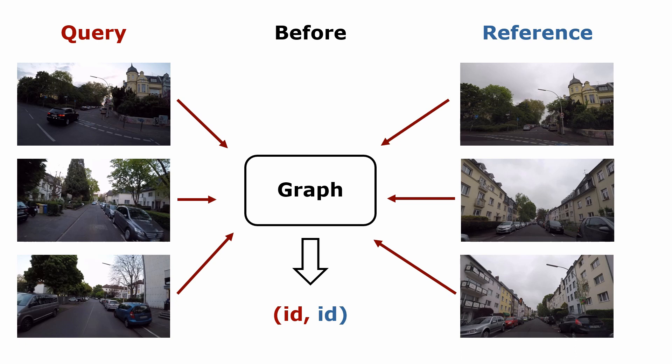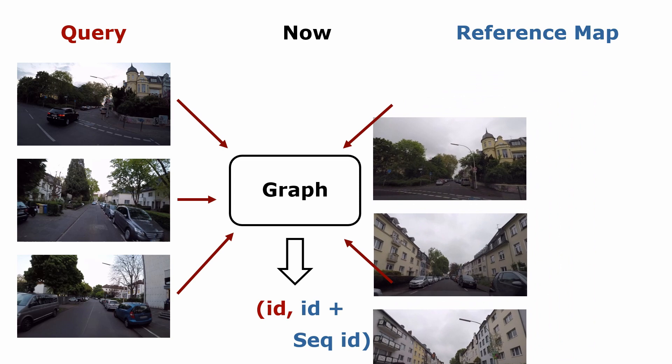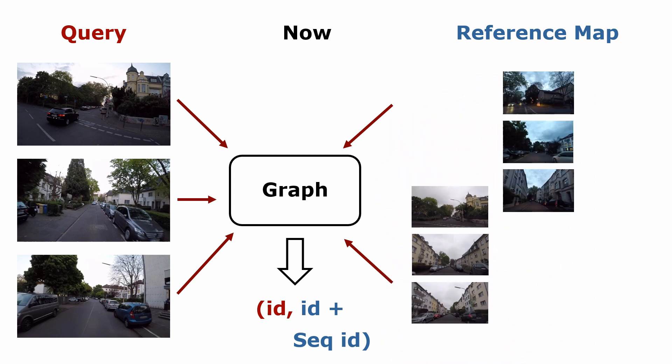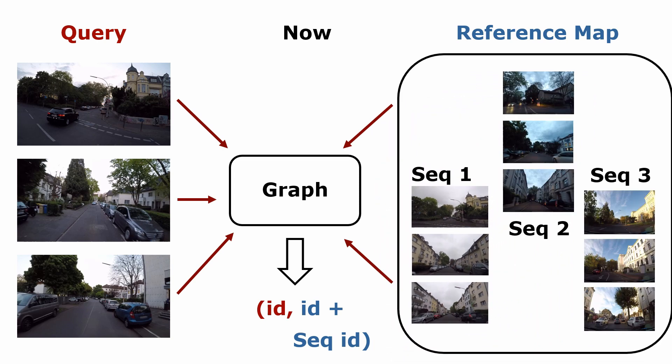In this paper we recognize places by considering sequences of images taken at different points in time. In our previous works we considered two image sequences and built a graph structure that allows finding matching images between a query and reference sequence. In this paper we extend this approach to work with multiple reference image sequences.